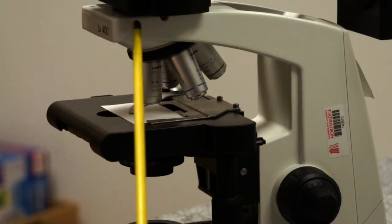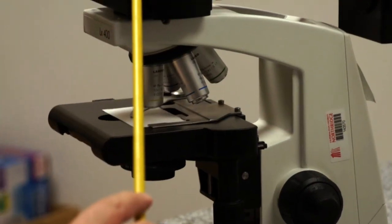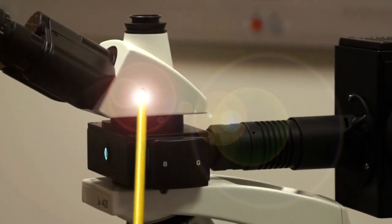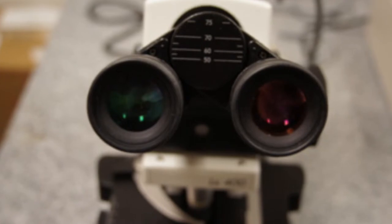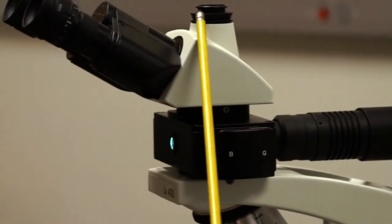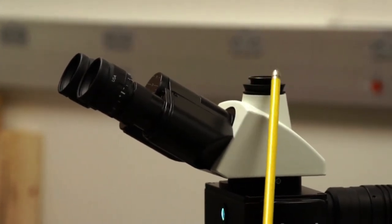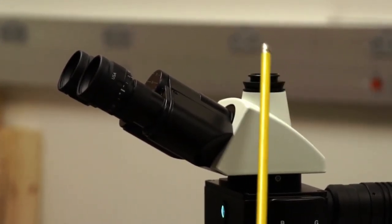It travels through the nose piece and up into the head of the microscope. This is called a trinocular head because you have two eyepieces for viewing and a third port to which you can attach a camera.